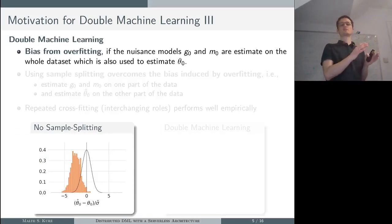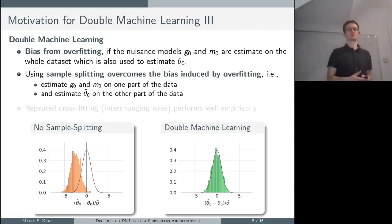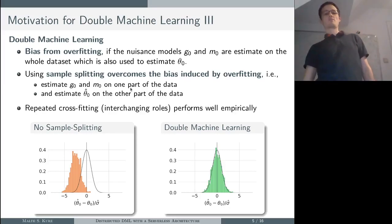A second key component of double machine learning is the usage of sample splitting. As always, there's the risk of overfitting. If we would estimate the nuisance models g and m on the same data as our parameter theta, we would again get a bias. To get rid of that, the double machine learning framework uses sample splitting, so basically g and m are estimated on one part of the data and theta on the other part. To get more efficient, we can even flip the roles and apply so-called cross-fitting. To get rid of potential randomness from the sample splitting, we even repeat that and aggregate our estimates. What we get then is a square root n consistency and approximately normally distributed parameter estimates, so we can do inference on theta and get something like a confidence interval.